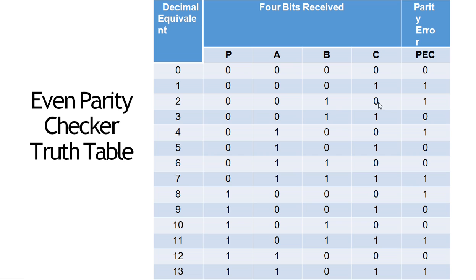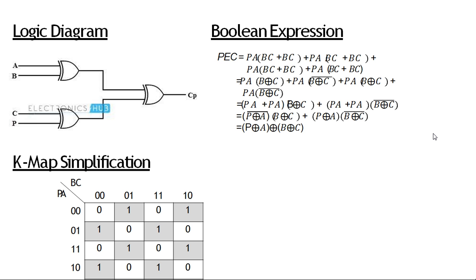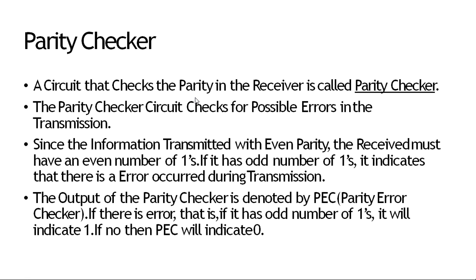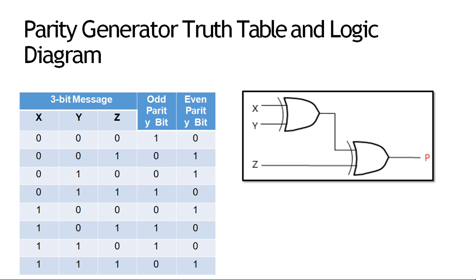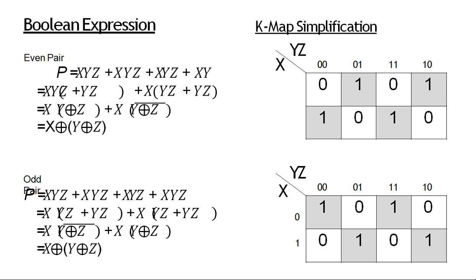अब इन सारे possible combinations से अगर parity checker की truth table बनाएं तो इस तरह की बनेगी, और उसके accordingly logical diagram बनाएं K-map के according। K-map में सारी चारों bits को डालके parity checker की truth table बनाते हैं। Parity को P bit और A का XOR, फिर इसका XOR B और C के साथ — तो यह parity checker का logical diagram जिसमें A और B का XOR करते हैं और C और P bit का XOR करते हैं। तो यह parity generator और parity checker का circuit है — thank you।